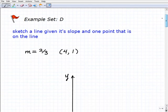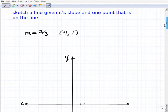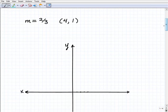What we're going to do here is sketch a line given its slope and one point that is on the line. So let me give you a quick overview of what we're trying to do. If we have one point that's on a particular line, in this case we know (4, 1) is on the line, we're saying it's on the line.